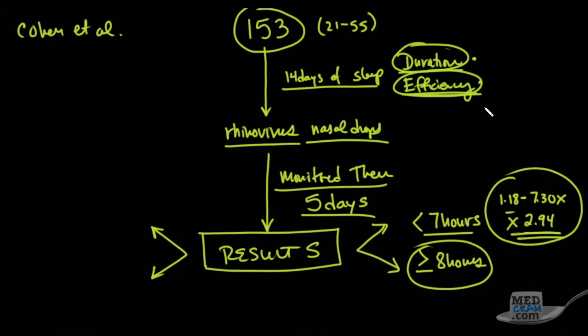There was another category: efficiency. Sleep efficiency is the amount of time you are asleep divided by time in bed. They divided that into greater than 98 percent versus less than 92 percent. Those that slept less than 92 percent of the time were 5.5 times the likelihood of getting the cold, with a range of 2.08 to 14.48.